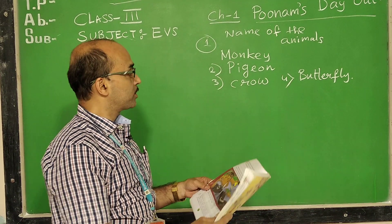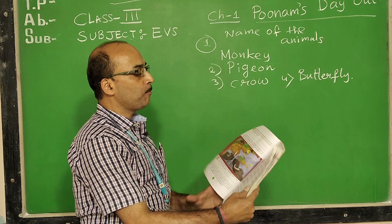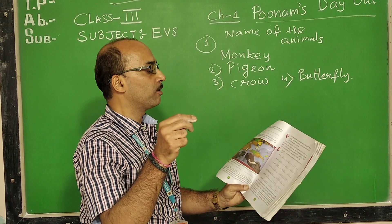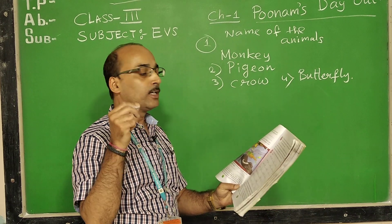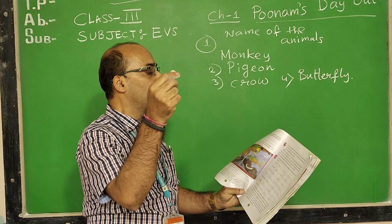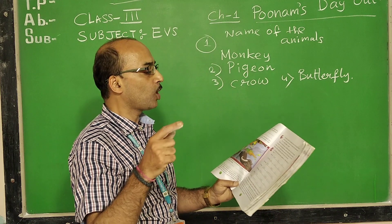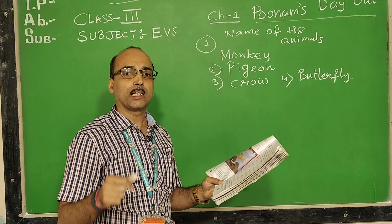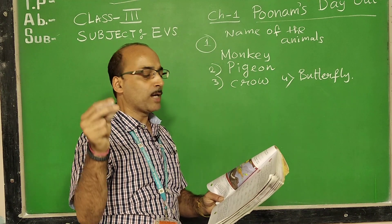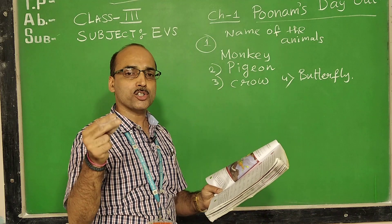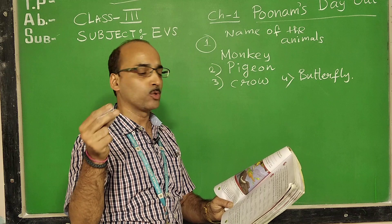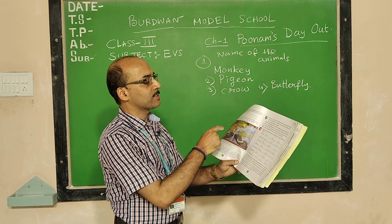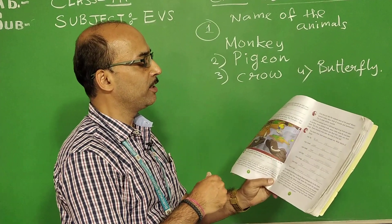Then go to page number 2. Poonam picked up a leaf from the ground and wiped her cheek with it. But her cheek was still sticky. She thought, 'Let me go and wash my face in the nearby pond,' as she could not wipe it properly. So she should wash her face and go to the nearby pond. See the picture of the pond — there she saw many animals. She is washing her hand — a very interesting picture.